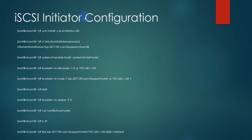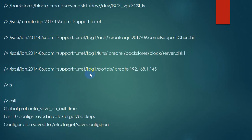To configure the iSCSI initiator, install the 'iscsi-initiator-utils' package. Then edit the file /etc/iscsi/initiatorname.iscsi where you will find the default IQN name for the client machine. Change it to a custom IQN name matching what we defined in the server's ACL. Then start the configuration on the server.